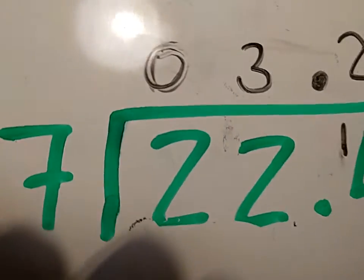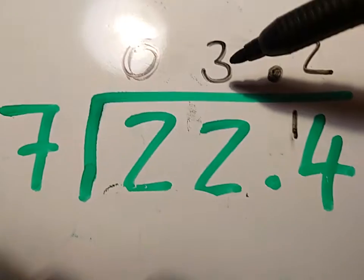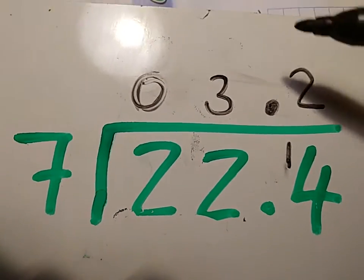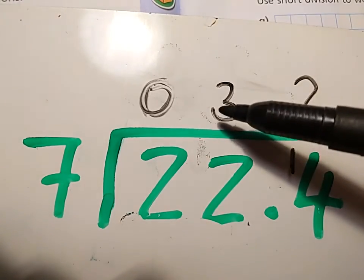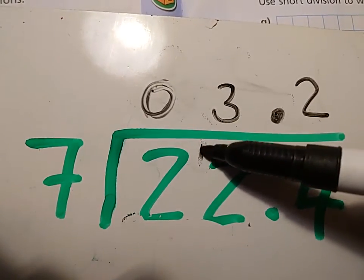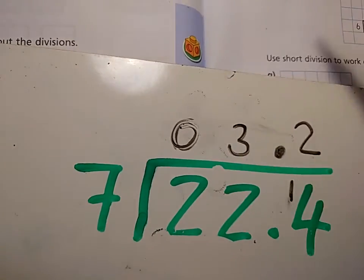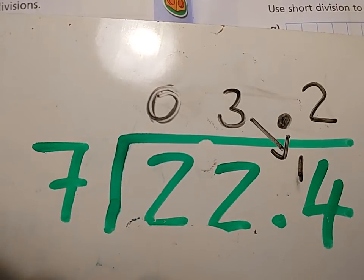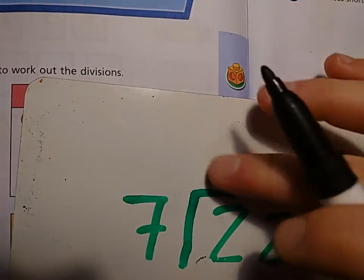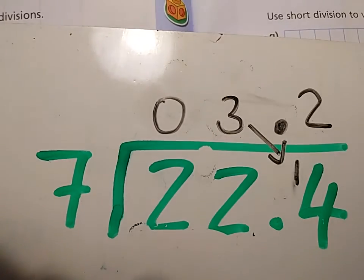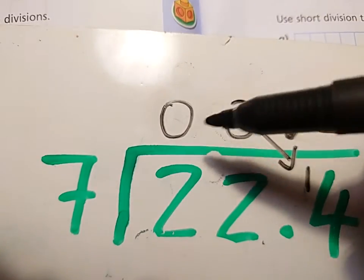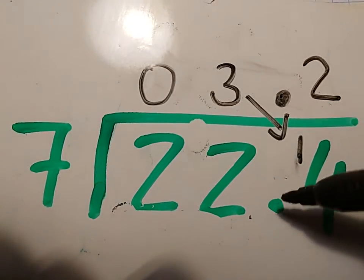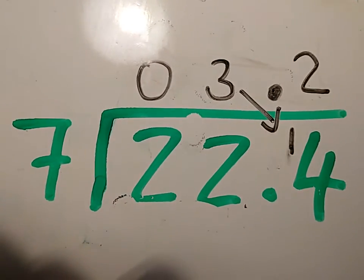A couple of things to remember when you're doing this. This is actually the second time I've recorded this video because the first time I made a mistake. I wrote 3 down here and put the remainder one there and got into all kinds of problems. Remember that the remainder goes to the next digit along. Also, even though this zero doesn't mean anything, it's a good idea to put it there just so you know that space has been done, that bit of working has been done. And thirdly, make sure you line up the decimals.